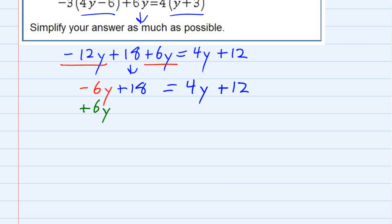I'm going to add 6y to the left. And, I can do that as long as I add 6y to the right as well. What I do to one side, I have to do to the other. That will cause this one to cancel, leaving me just the 18 equals 4y plus 6y is 10y. And then, the 12 just comes down.